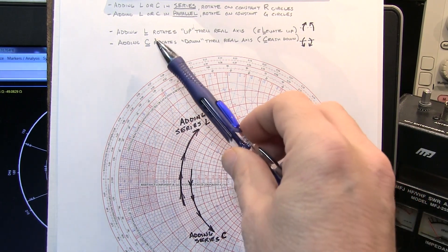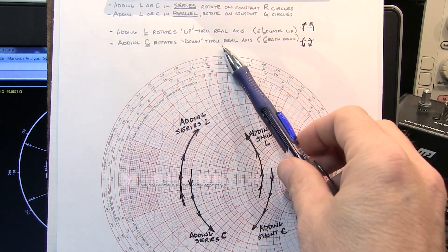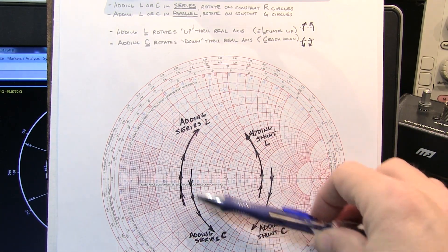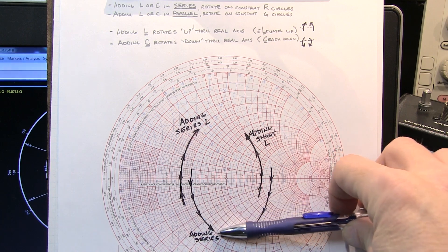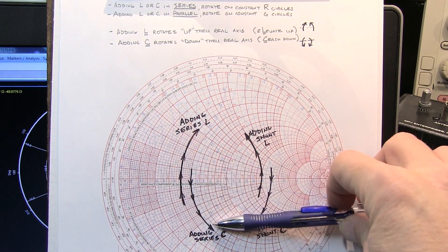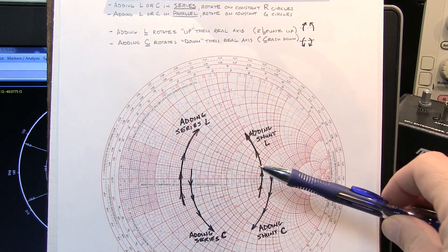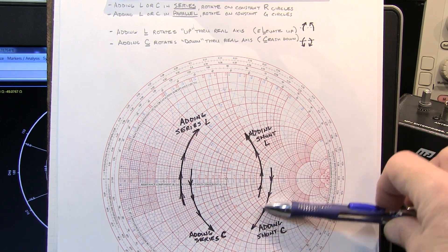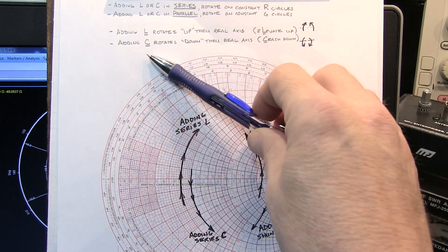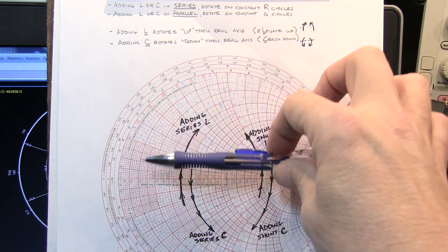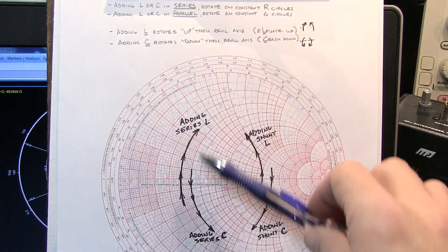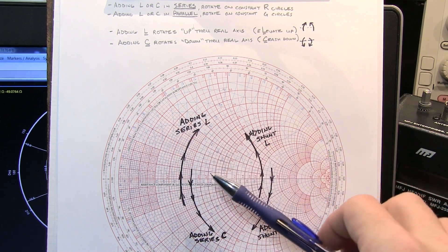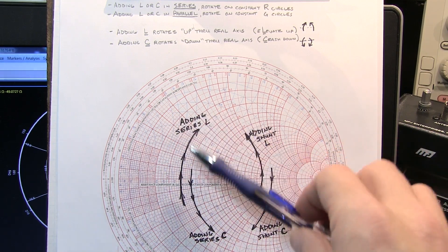Now as you might imagine, adding a capacitor will rotate us down. So whether that capacitor is in series with our load, we're going to rotate down on the resistance circles, or that capacitor is in parallel or a shunt capacitor, we're going to rotate down along the constant conductance circles. And again, C for crashing down or going down on the Smith chart. So it's a pretty easy way to remember how we move around on the Smith chart by adding a series or shunt inductor or capacitor.